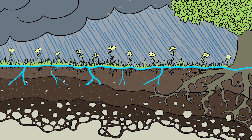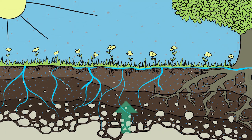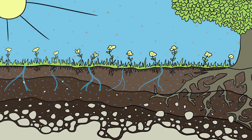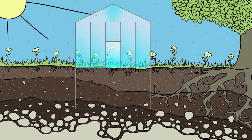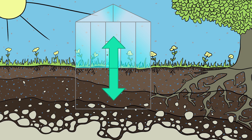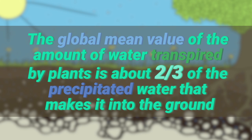After it rains, the water that makes it into the ground can either get sucked up by the roots of plants or flow through the ground creating soil. In controlled environments, scientists can actually measure how much water was transpired by plants and how much went to the subsurface runoff. It has been found that the global mean value of the amount of water transpired by plants is about two-thirds of the precipitated water that makes it into the ground — the same value that Alan Hunt and his colleagues found to be the ideal ratio to remove CO2 from the atmosphere.